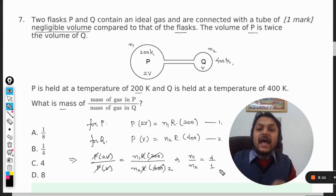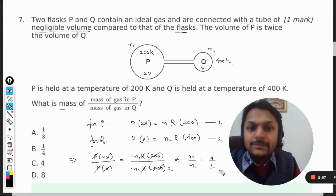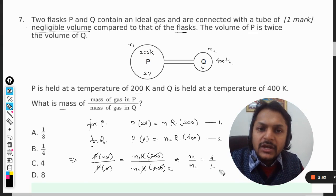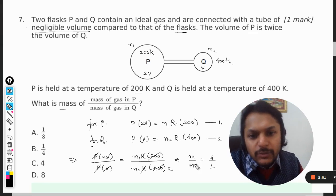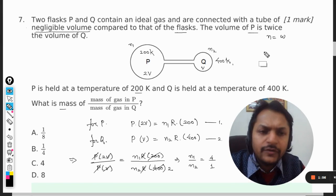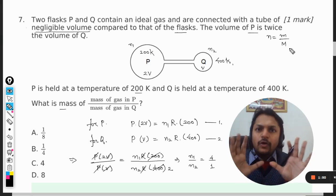This is what we have. Now n2 divided by n1 is coming out to be 4 divided by 1. It means that chamber P is containing 4 times the moles which are contained in chamber Q. So obviously now you can see that number of moles can also be written as the weight or the mass of the gas divided by the molecular mass.